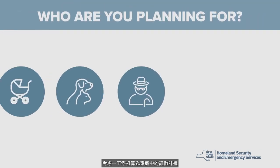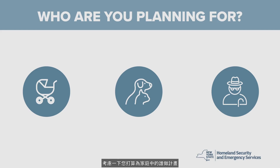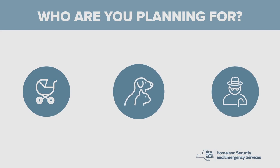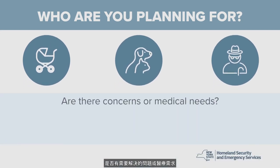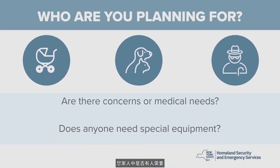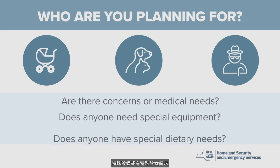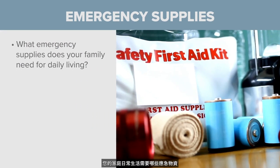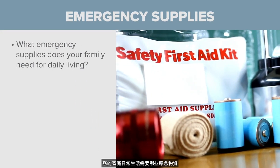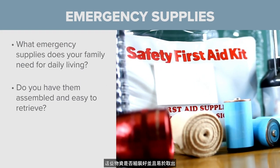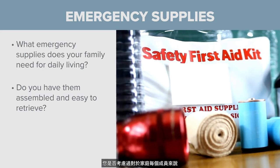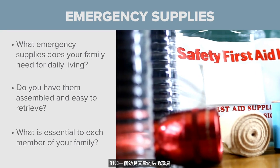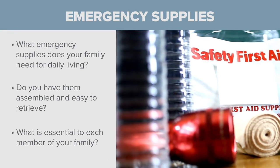Now, think about who you may be planning for in your family — for example, babies or infants, the elderly, or pets. Are there concerns or medical needs that need to be addressed? Does anyone in your family need special equipment or have special dietary needs? What emergency supplies does your family need for daily living? Are these supplies assembled and easy to retrieve? And have you considered what is essential to each member of your family, such as a favorite stuffed animal or toy for a young child?